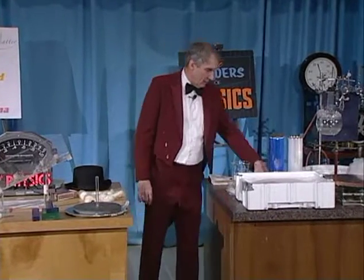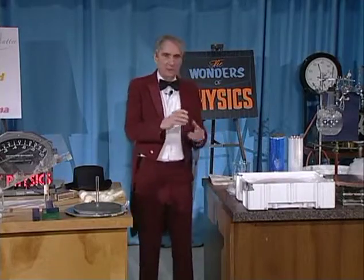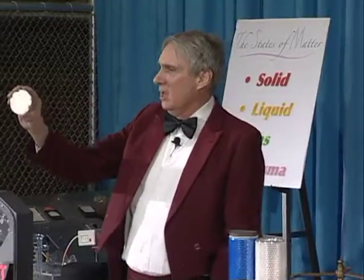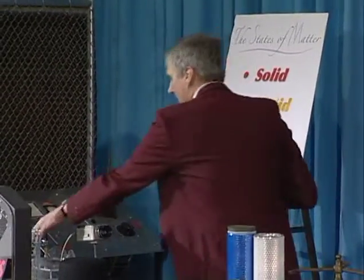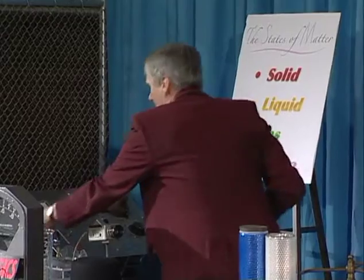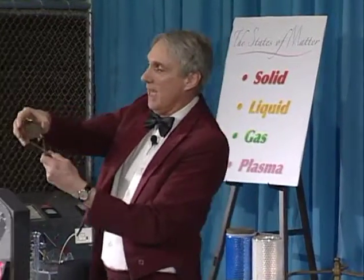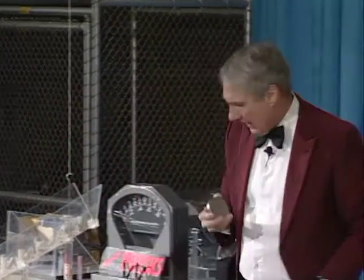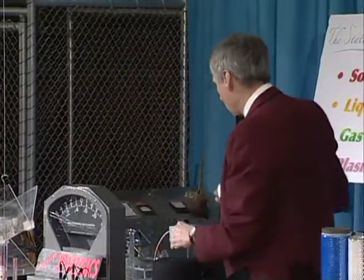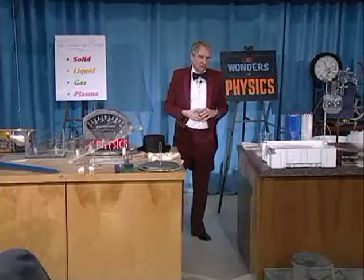I want to show you an example of something that involves a magnet. Here I have a very powerful magnet, and I can illustrate that by taking something that's made out of iron or steel — you see it's attracted to the magnet by quite a large force. So this is a magnet, and you know that magnets attract some things but not other things.